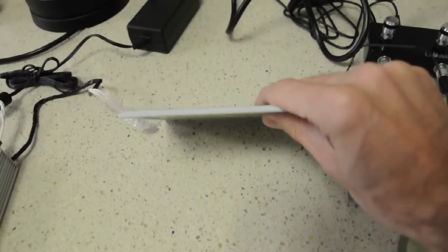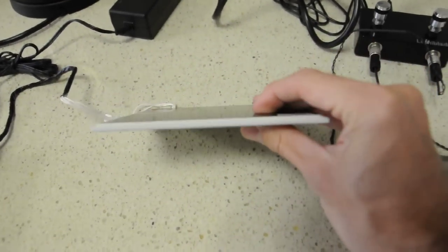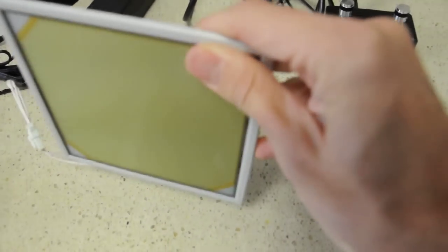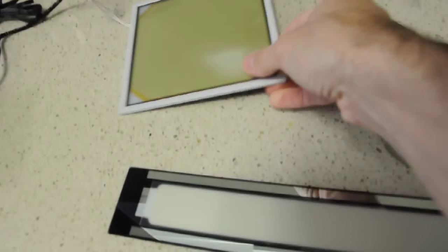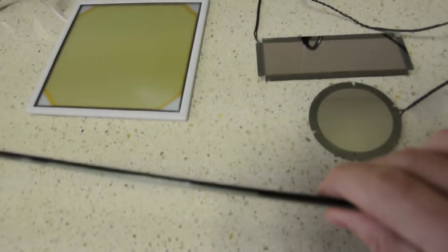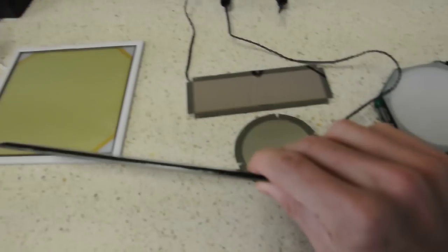The Lumiotech panel is quite a bit thicker, but I think that's mostly because of the frame and not the OLED itself. And the BlackBuddy is somewhere, I think, in between.